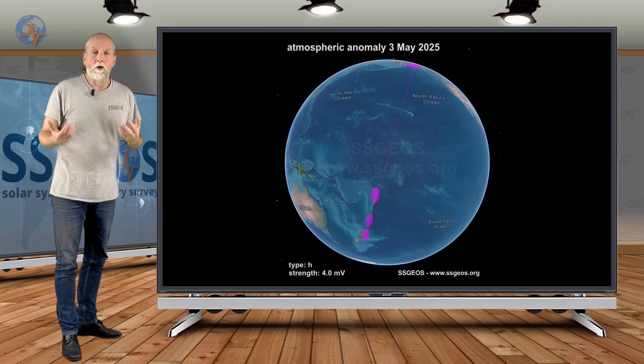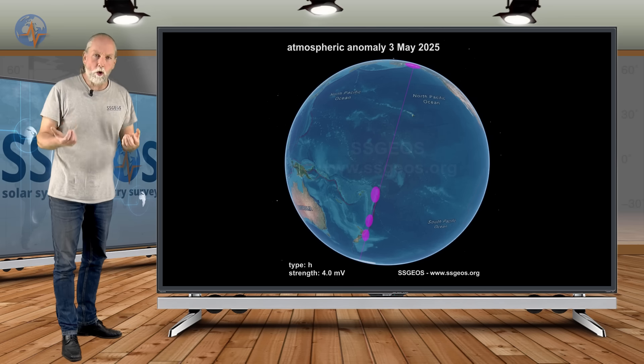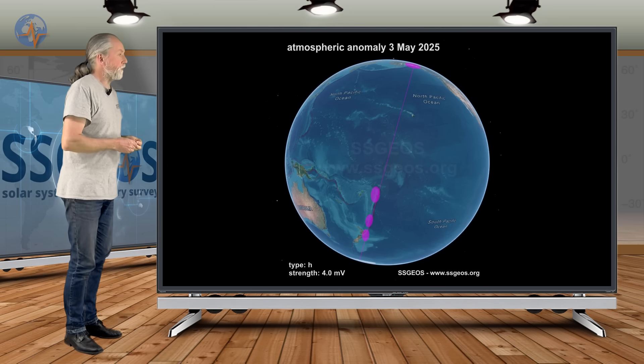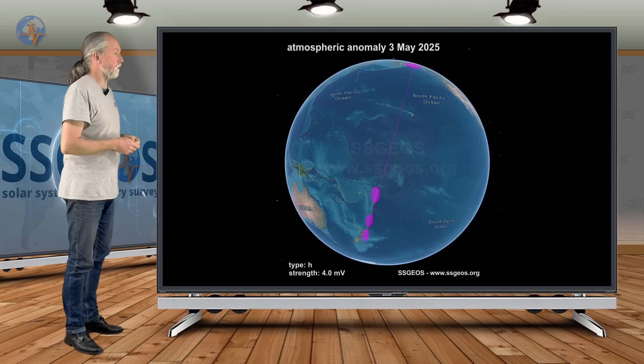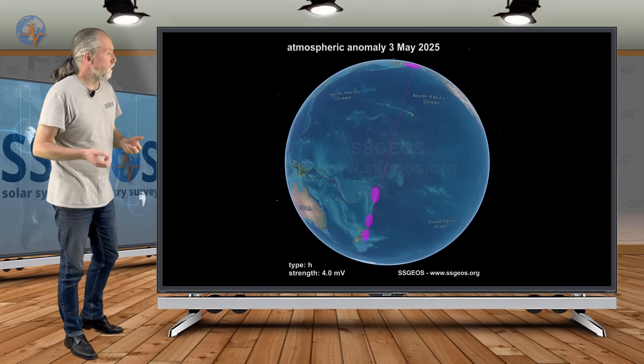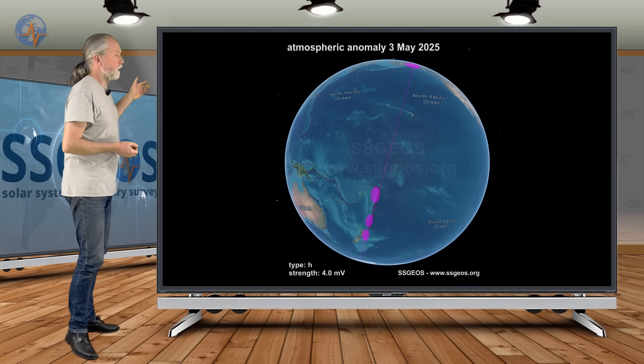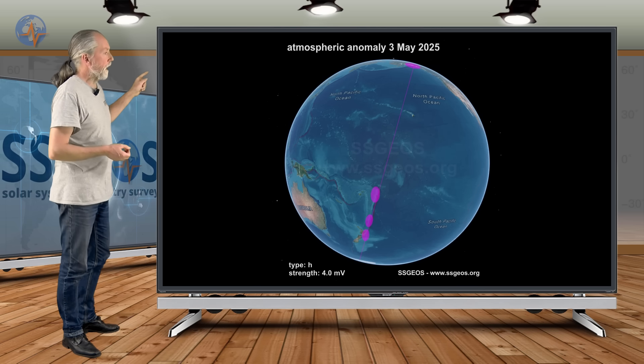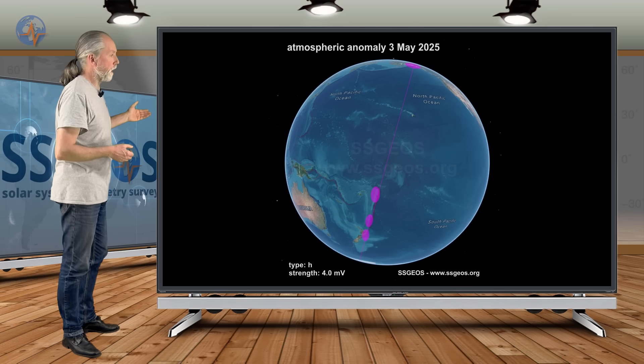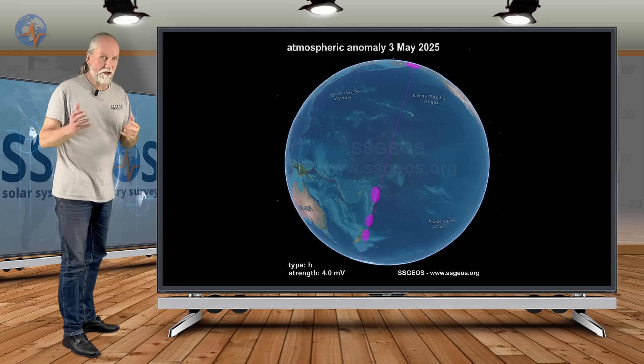If we look at atmospheric anomalies, I selected the strongest anomalies. This is with three millivolts or higher from the third to the seventh. That could indicate possible potential regions for larger seismic activity. In the Pacific, in the north, that indicates Alaska. To the south, Tonga, Kermadec, and New Zealand.